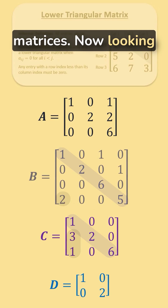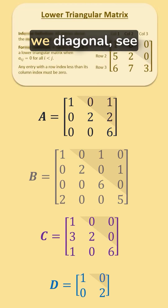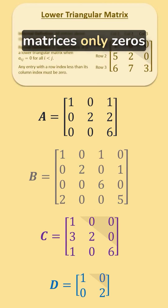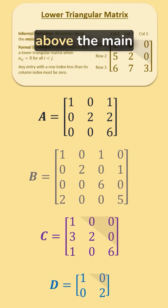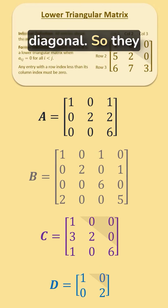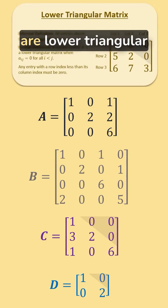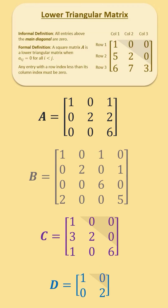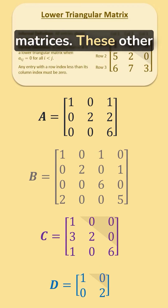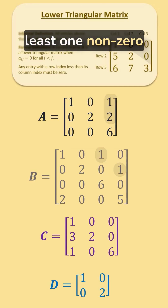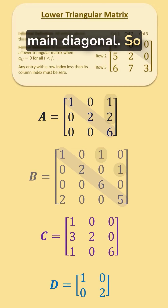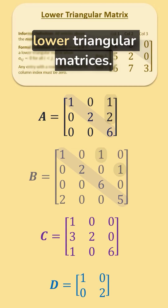Now, looking at the entries above the main diagonal, we see that these matrices have only zeros above the main diagonal, so they are lower triangular matrices. These other matrices have at least one nonzero element above the main diagonal, so they are not lower triangular matrices.